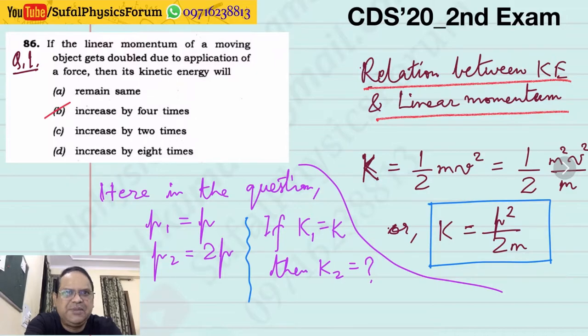Question number 1: If the linear momentum of a moving object gets doubled because of the application of force, what will happen to kinetic energy?